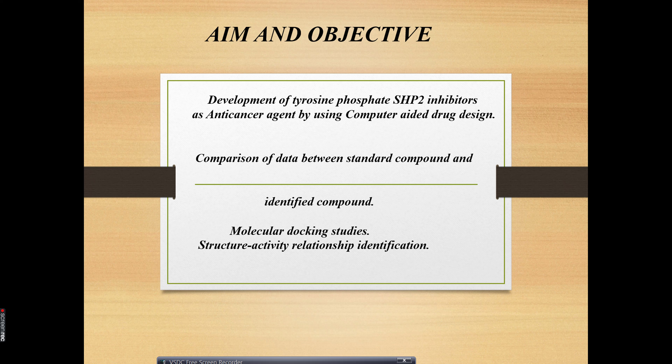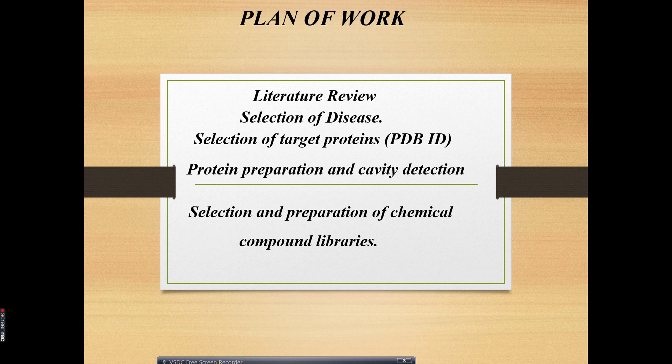Your plan of work: first literature review, then selection of disease, then selection of target. First learn all the literature, select the disease, and then select a protein — that means which PDB ID is responsible for the target protein. That protein and receptor are then taken, and you have to make a cavity inside the protein, which is called protein preparation or cavity detection.